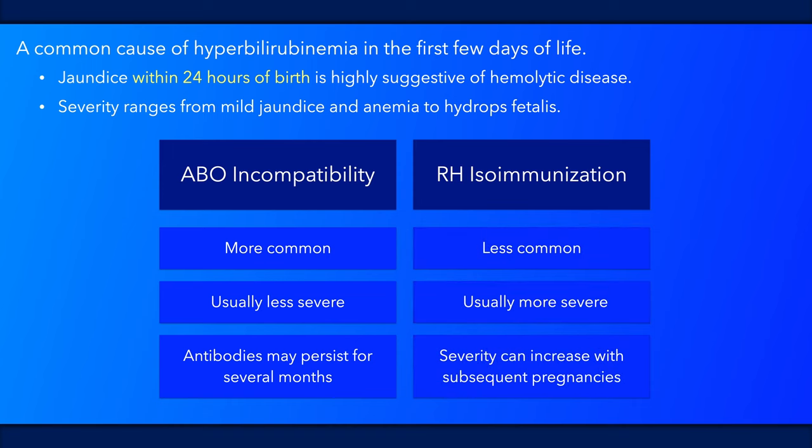RH incompatibility is usually more severe than ABO incompatibility. As well, severity can increase with each immunized pregnancy. Affected newborns are often anemic and have higher levels of bilirubin.